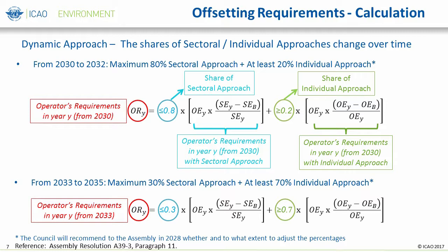For the period of 2030 to 2032, the percent individual share is at least 20%. For the period from 2033 to 2035, it is at least 70%. According to Assembly Resolution A39-3, paragraph 11, the exact percent share of the sectoral approach and individual approach for these periods will be determined by the Assembly in 2028.